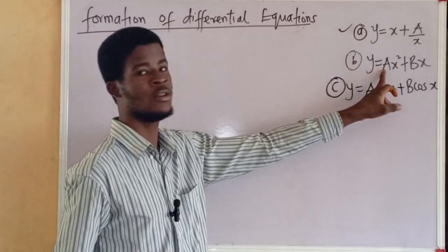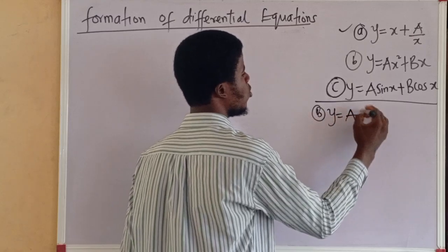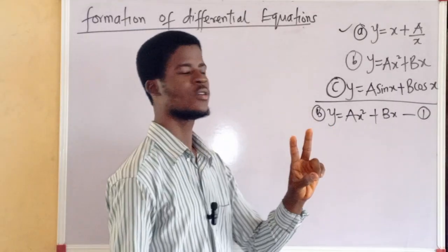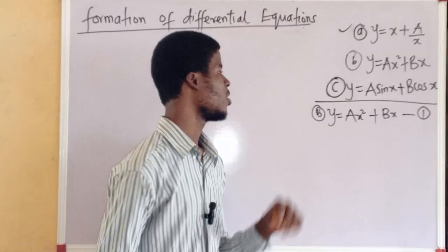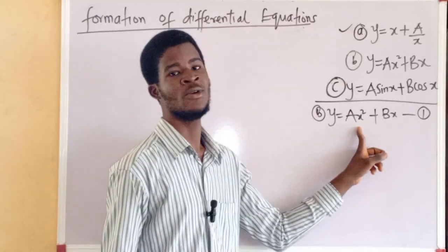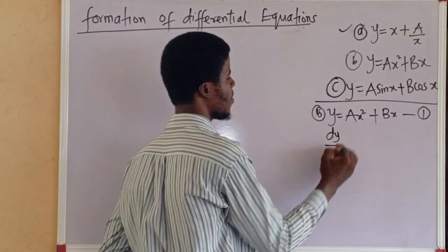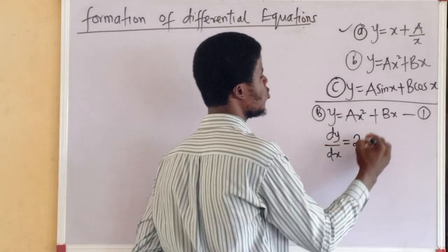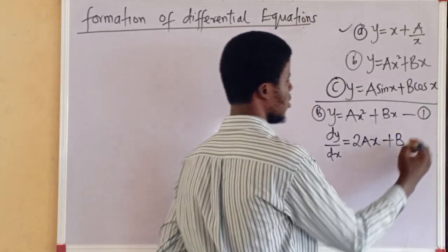Now let us form a differential equation for the second one. We have y equal to ax² plus bx — let's call this equation 1. In this case, we have two constants, two unknowns: a and b. So we are going to differentiate two times — that is, we are going to take the first and second derivative with respect to x. The first derivative, dy/dx, is equal to: differentiate ax² to get 2ax, then differentiate bx to get b. Let's call this equation 2.